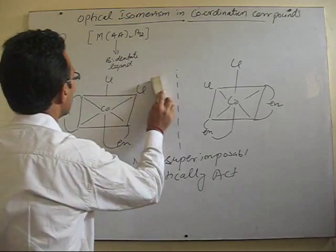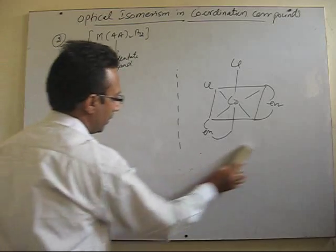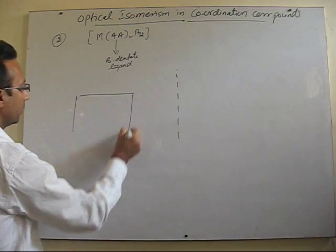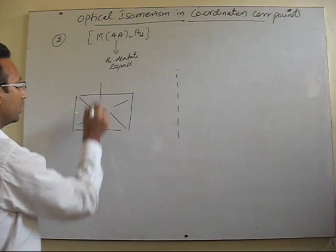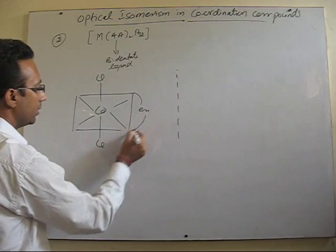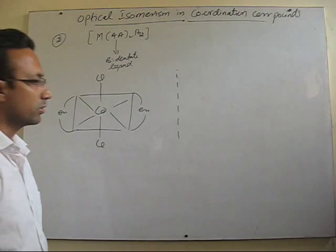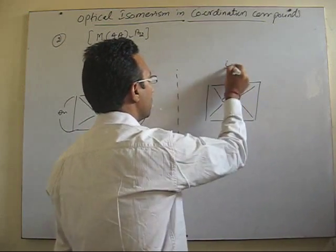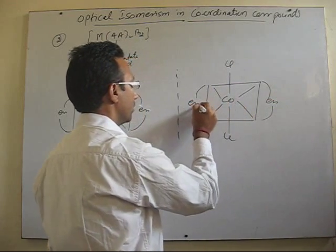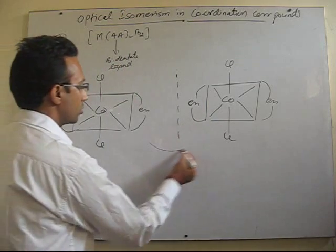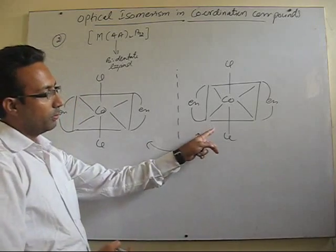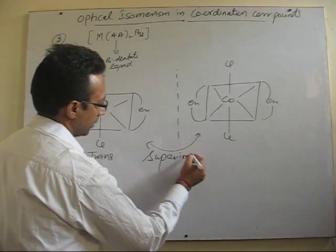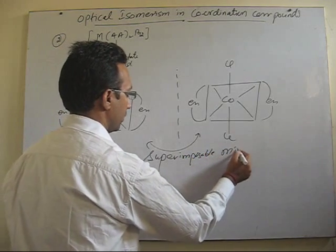Now let me draw its trans isomer. For the trans isomer, we keep the two chlorines on the diagonally opposite position and the nitrogen donors also on the diagonally opposite position. If you draw its mirror image, you will see that the mirror image will be exactly the same as that of the compound. So this is its mirror image, and you see these two — one and two — are superimposable.